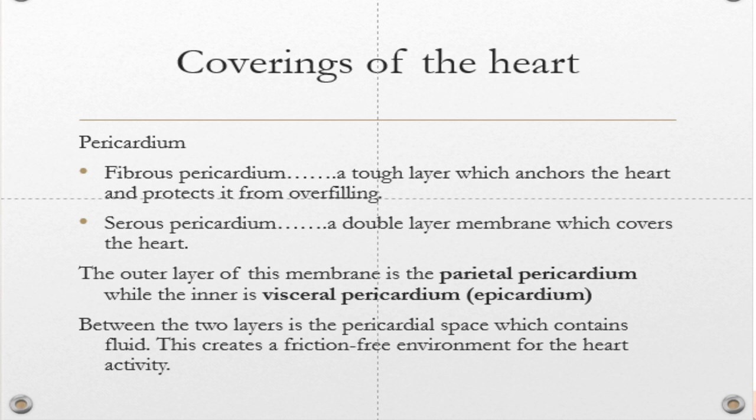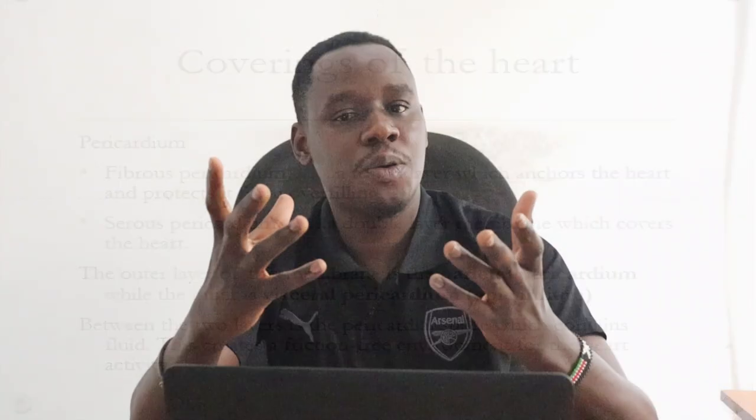Just below the pericardium, we have the muscular layer of the heart, and we call it the myocardium. 'Myo' simply means muscle, and 'cardium' still comes from cardio, meaning heart — so it is the muscle of the heart. This middle layer forms the bulk of the heart; it forms a big chunk of it. Finally, from the inside, we have the endocardium. 'Endo' simply means inside, so it is the inner lining of the heart — endo meaning inside, cardium meaning heart.